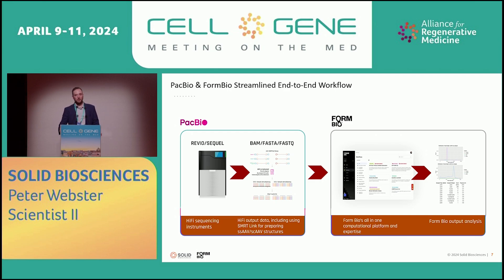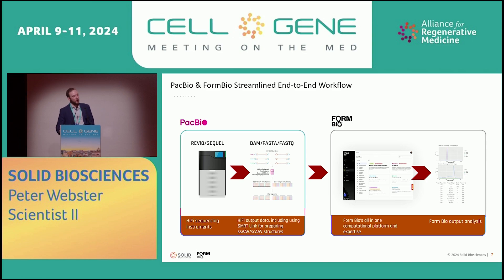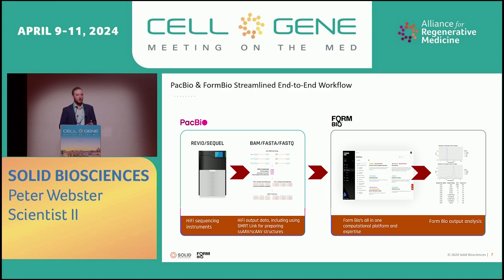NGS is our chosen data set. It gives you a really powerful and comprehensive look at the DNA profile of a product. It's not without its drawbacks and assumptions, but in general it gives a really correlative look at your DNA product. Our chosen platform is PacBio for its long-read sequencing techniques. We run PacBio, give FormBio our data set, and they turn it into an analysis that we're able to use to make candidacy selections and important decisions.